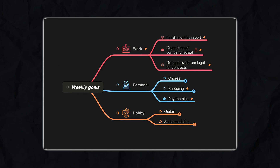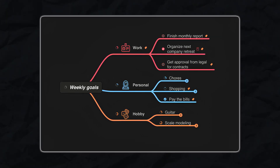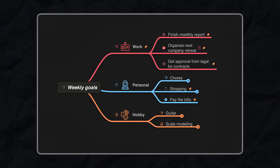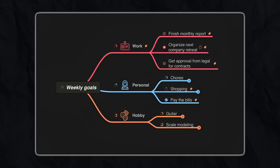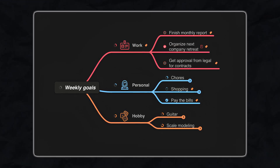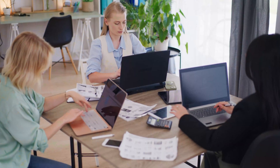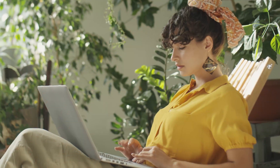Creating nodes — the building blocks of your mind map — is as simple as clicking and typing. Each node can represent an idea, a task, or a thought, and these nodes can be connected to show relationships and hierarchies. Whether you're creating a plan for a work project or outlining the chapters of your next novel, you can start with a single idea and let it branch out organically.